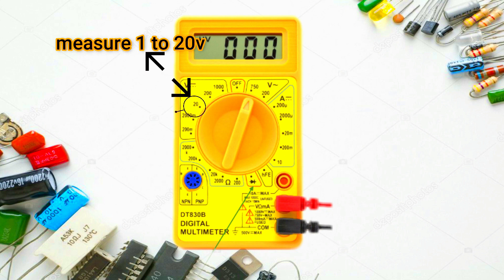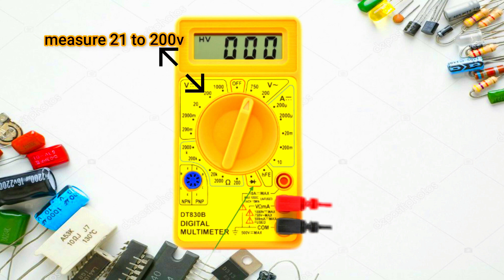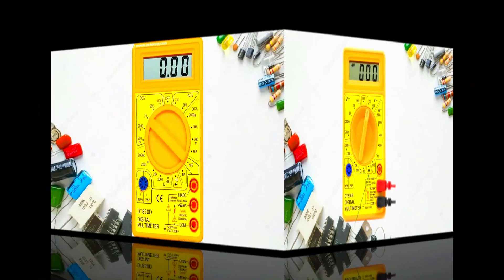For example, measure 2 to 20 volts in the 20 volt range, 21 volts to 200 volts in the 200 volt range. Set your multimeter range according to the amount of voltage, same as current, just like that.